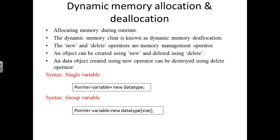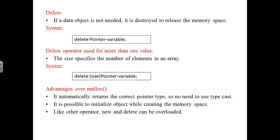For the syntax of the new operator, for a single variable: pointer_variable = new data_type. For a group of variables (an array): pointer_variable = new data_type[size]. For the delete operator, if a data object is not needed it can be destroyed to release memory during runtime. For a single value: delete pointer_variable. For an array: delete[] pointer_variable.